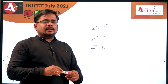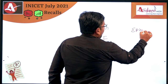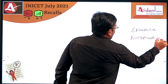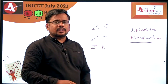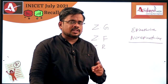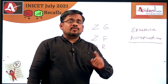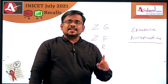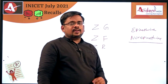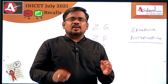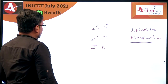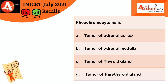Zona fasciculata secretes glucocorticoids, and zona reticularis secretes androgens. The adrenal medulla has two hormones: epinephrine and norepinephrine. The adrenal medulla normally secretes more epinephrine — 80% epinephrine and 20% norepinephrine. However, the tumor of the adrenal medulla, called pheochromocytoma, secretes more norepinephrine and less epinephrine. This is the key difference between normal adrenal medulla secretion and the tumor.